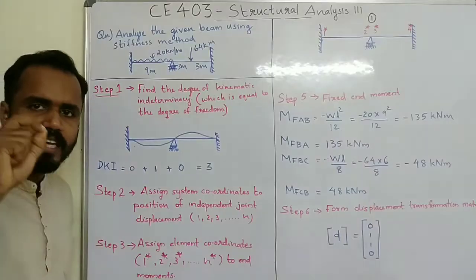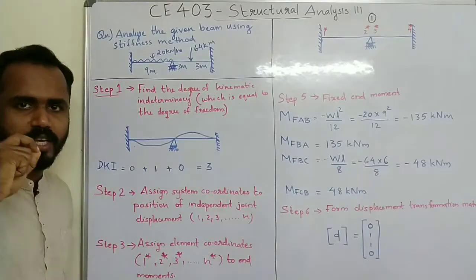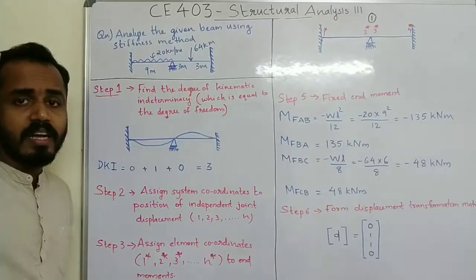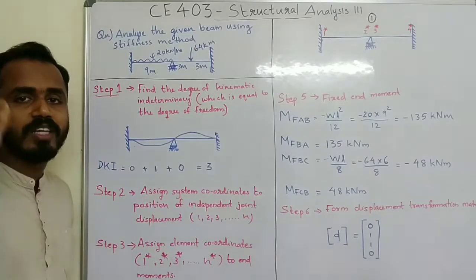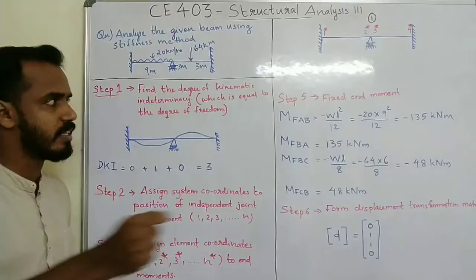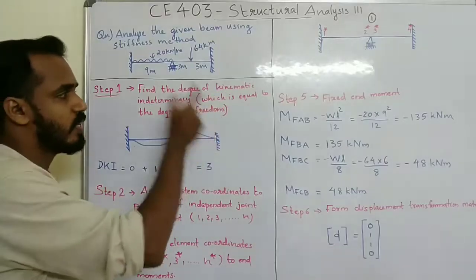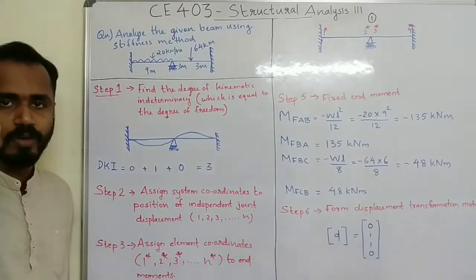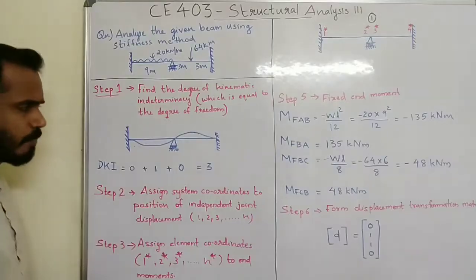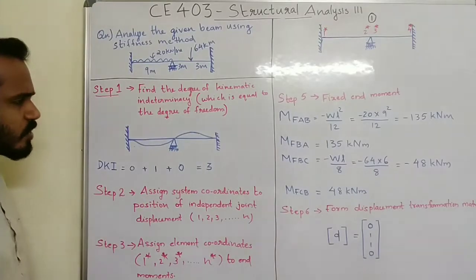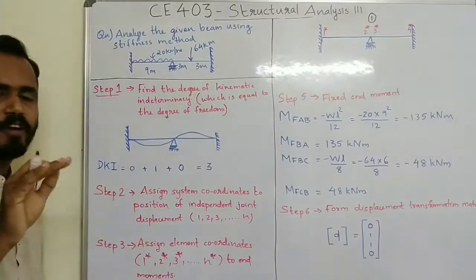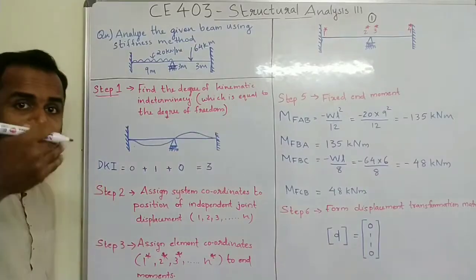Step 1: Find the degree of kinematic indeterminacy. In the stiffness method, the first step is to calculate kinematic indeterminacy, which is equal to the degree of freedom. Looking at the figure, this end is fixed, so the degree of freedom here is 0.